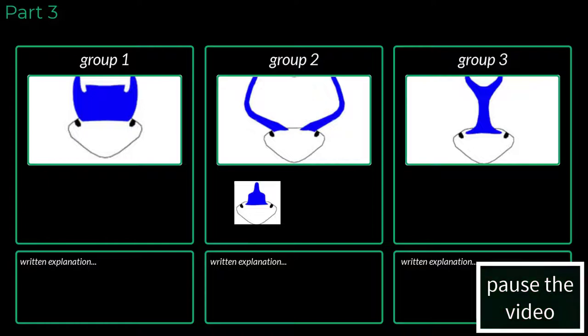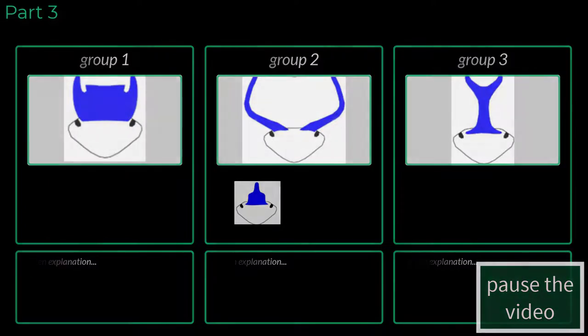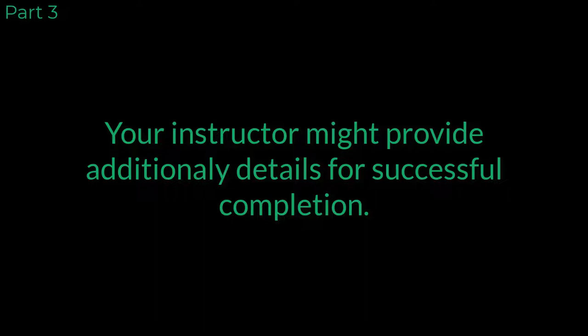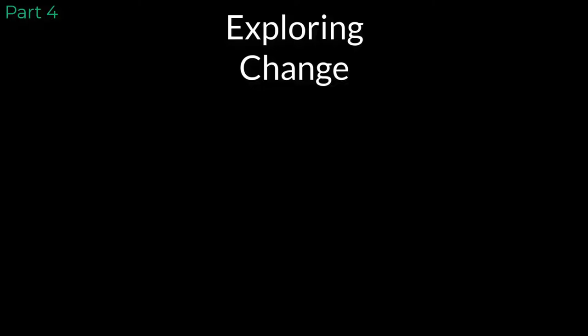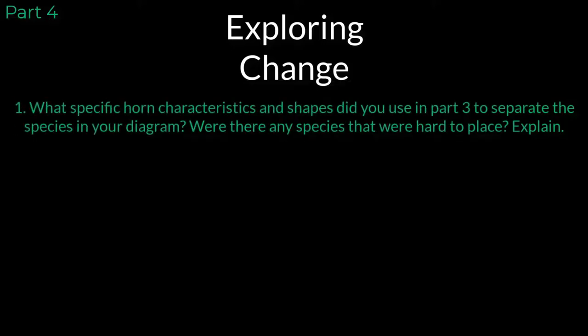Resume when ready. In this video we explored different types of change that exist within species and populations, leading us to a clear view of what evolutionary change looks like. Answer these final questions as you continue your learning. Question 1: What specific horn characteristics and shapes did you use in Part 3 to separate the species in your diagram? Were there any species that were hard to place? Explain.